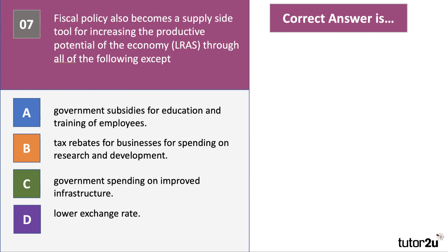One more question. Fiscal policy also becomes a supply-side tool for increasing the productive potential of the economy through all of the following except what? So of these four options, three are fiscal supply-side policies, but which one is the odd one out? Have a go at question seven.